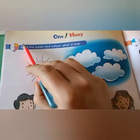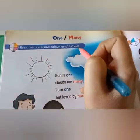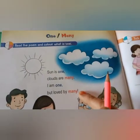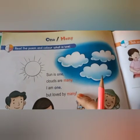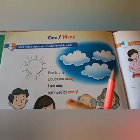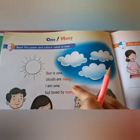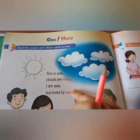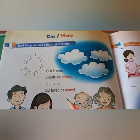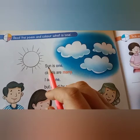Read the poem and color what is one. Children, first you have to read this poem. Then you have to color the thing which is only one. You have to read the poem or rhyme. Come on.